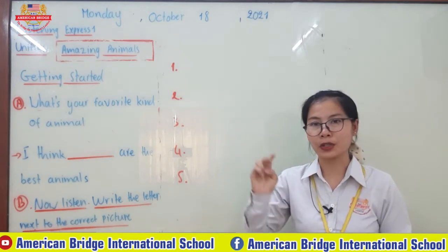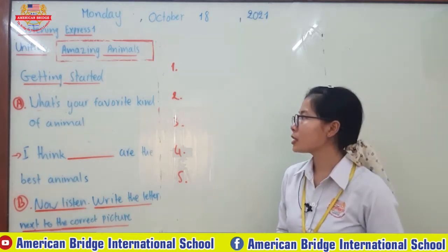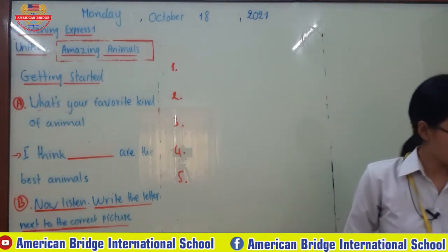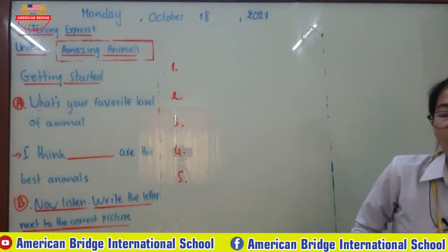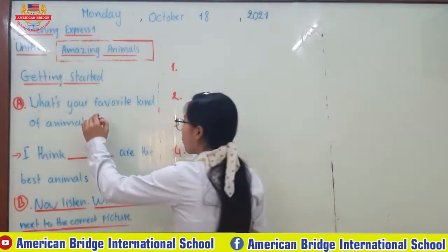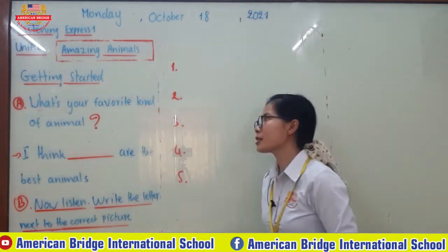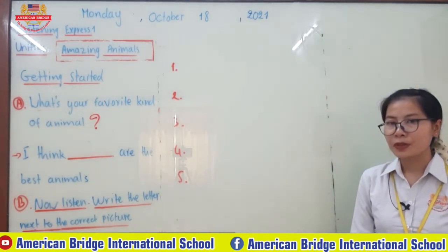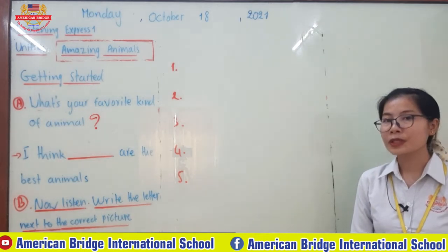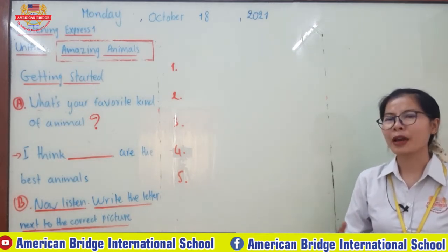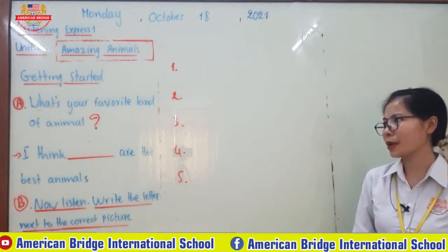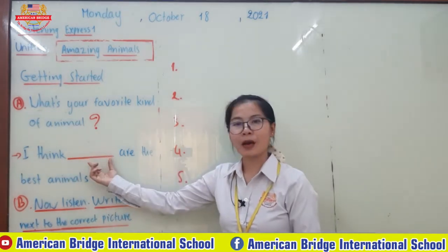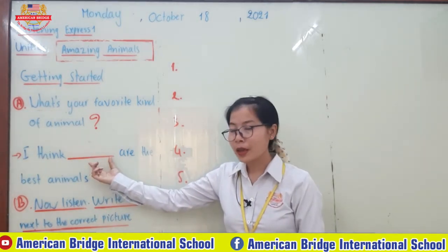You have two parts to learn. The first part: what's your favorite kind of animal? You have to say one or two animals, depending on you. You can say 'I think...' and then complete with an animal.